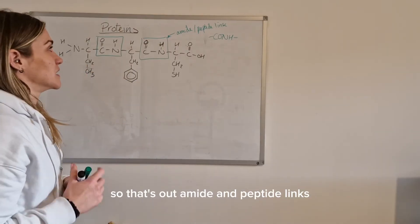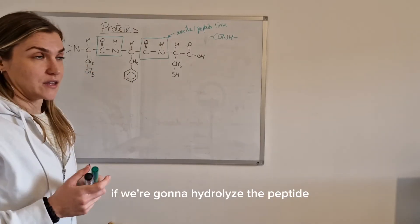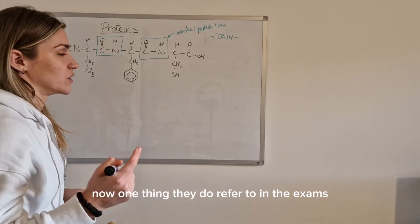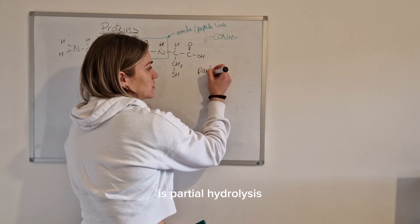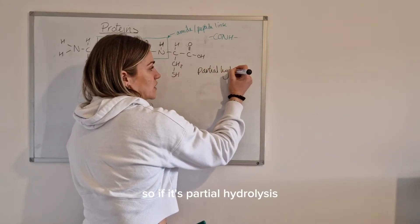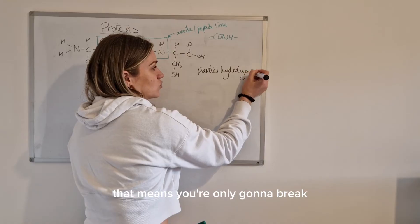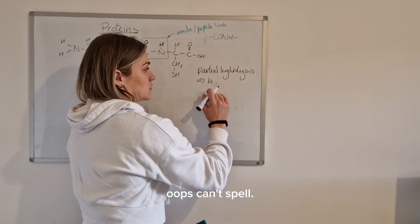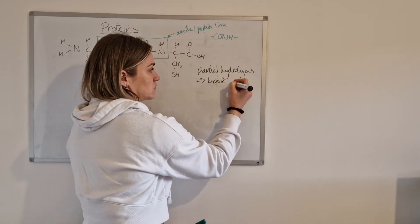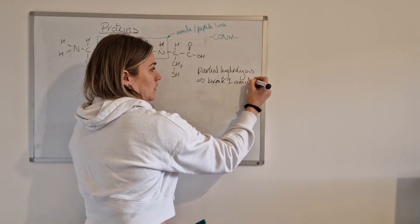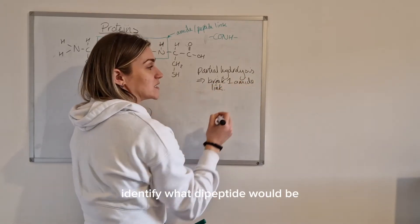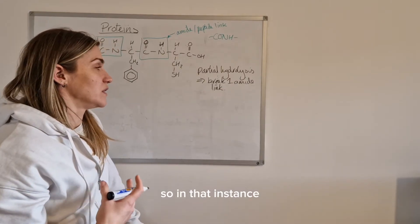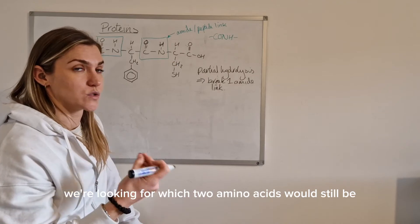So that's our amide peptide links. If we're going to hydrolyze the peptide it's those links that get broken. Now one thing that they do refer to in the exams is partial hydrolysis. So if it's partial hydrolysis that means you're only going to break one of the amide links you've got. And quite often you'll be asked to identify what dipeptide will be produced when you partially hydrolyze it so in that instance we're looking for which two amino acids would still be attached to each other.